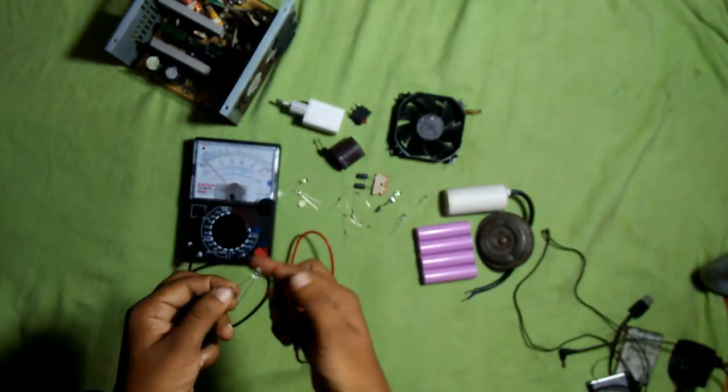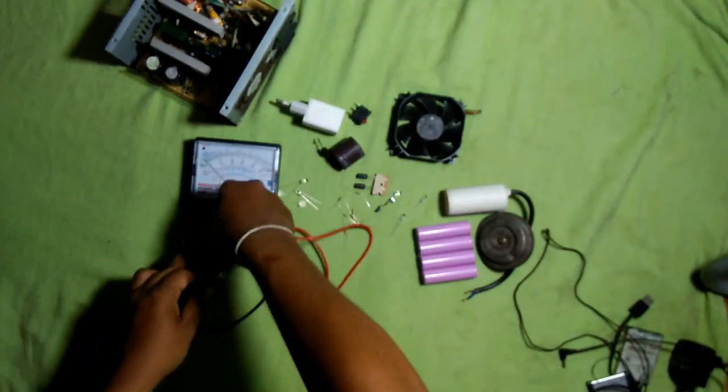When we decrease the resistance of the multimeter, the glow of the LED will increase.